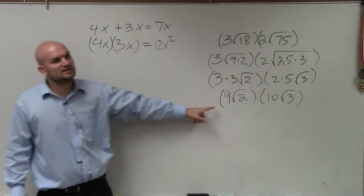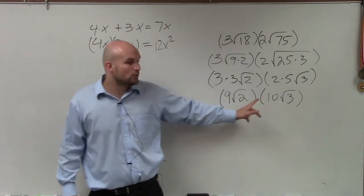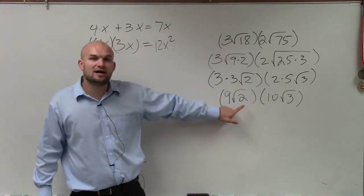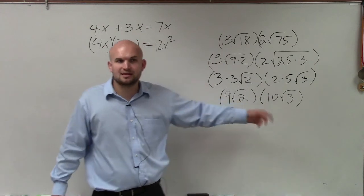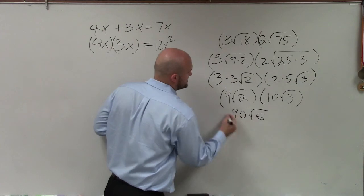So we're going to do the exact same thing. When we multiply radical expressions, unlike addition and subtraction, we can multiply our radicands. So that means I can multiply 2 times 3, which would give us 6. So 9 times 10 is 90 times the square root of 6.